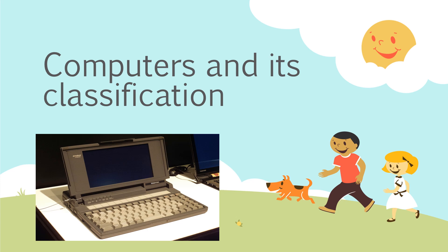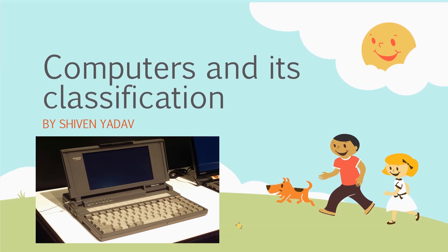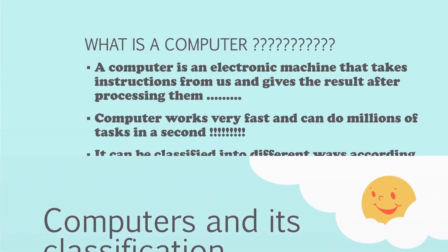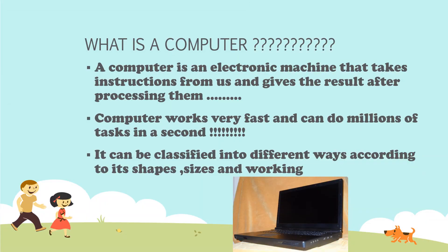Computers and its Classification. What is a computer? A computer is an electronic machine that takes instructions from us and gives us the result after processing them. A computer works very fast and can do millions of tasks in a second.